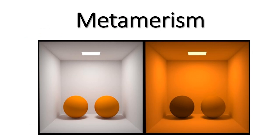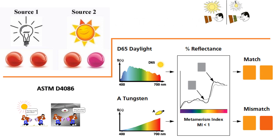Welcome to the fascinating world of metamerism. Metamerism is the term used to describe the fact that two lights with different proportions of energy at certain wavelengths may produce the same perception of color — this is known as illuminant metamerism — or that the same light may produce different color perception in different observers, which is known as observer metamerism.